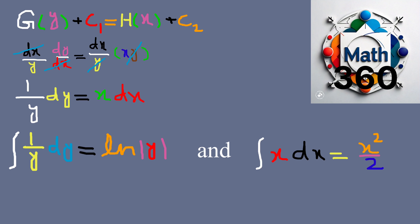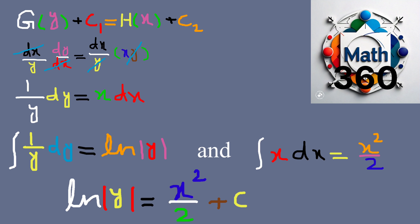So we get: the natural log of the absolute value of y equals x squared over 2 plus c, where c is the constant of integration. This constant is arbitrary because the indefinite integral of a function can include many constant values.